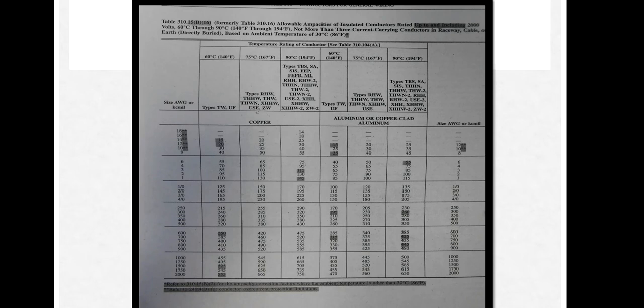Now, ampacities are derived from this table, Table 310.15(B)(16), and it's very important to read tables when you see them in the codebook. This table is based on two important principles: there are only three current carrying conductors in the raceway when these ampacities were measured, and this is at 30 degrees Celsius. Notice that it is divided into copper and aluminum, and each column for each type of insulation has a temperature rating: 90 degrees, 75 degrees, and 60 degrees.